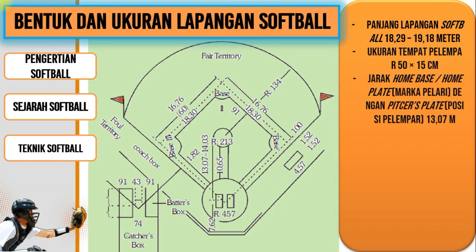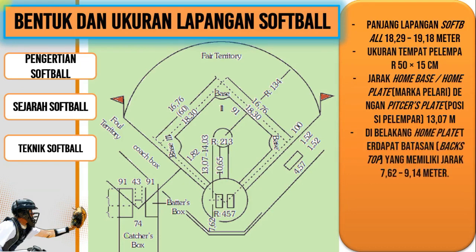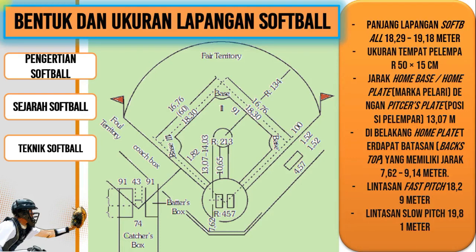Kemudian, jarak home base atau home plate, disebut juga dengan marka pelari, dengan pitcher plate atau posisi pelempar, yaitu 13,07 meter. Di belakang home plate terdapat batasan atau disebut juga dengan backstop, yang memiliki jarak 7,62 sampai 9,14 meter. Untuk lintasan fastball yaitu 18,29 meter, dan untuk lintasan slow pitch yaitu 19,81 meter.